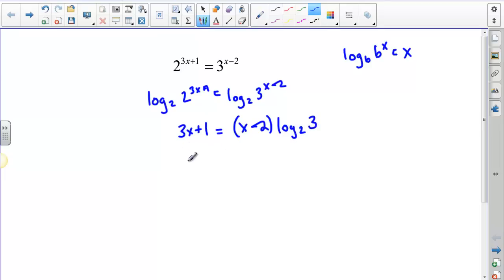Now I need to get x by itself, and it's okay that I have a 3x here, but I have this x minus 2 here. I could divide both sides by x minus 2, but that's going to be kind of a problem. So what I'm actually going to do is I'm going to distribute the log base 2 of 3 to both parts here. And that's going to give me x times log base 2 of 3 minus 2 log base 2 of 3. And on the left side, I'm going to have 3x plus 1.